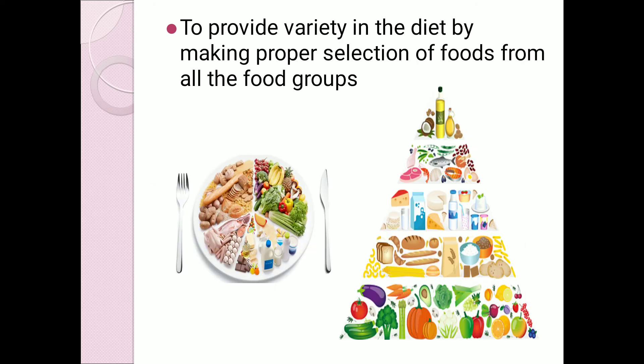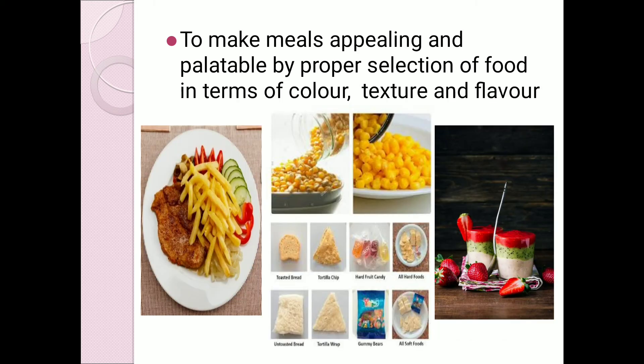The next objective is to provide variety in diet by making proper food selection from all food groups. While keeping nutritional requirements in mind, we must also ensure that foods from all food groups are included in the daily diet — including cereals and pulses, milk and milk products, fruits and vegetables, meat, fish, egg and poultry, and fats and oils — so that the person for whom you are meal planning does not suffer from any deficiency disease.